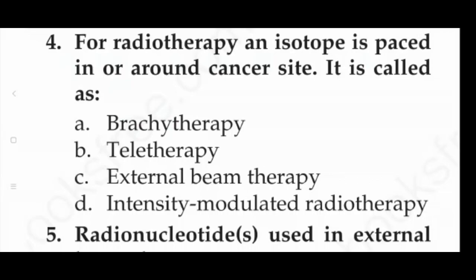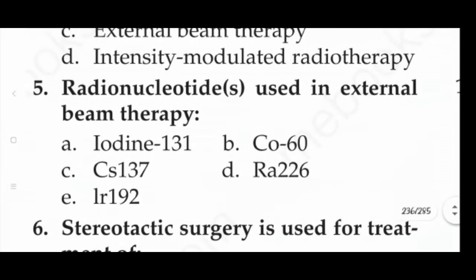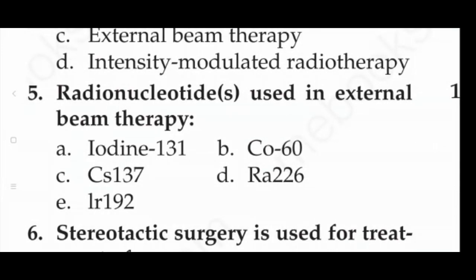The fifth question: radionuclides used in external beam therapy — options are option A: Iodine-131, option B: Co-60, option C: Cs-137, option D: Ra-226, option E: Ir-192. The answers are option B, option C, and option E — these three are the radionuclides used in external beam therapy.